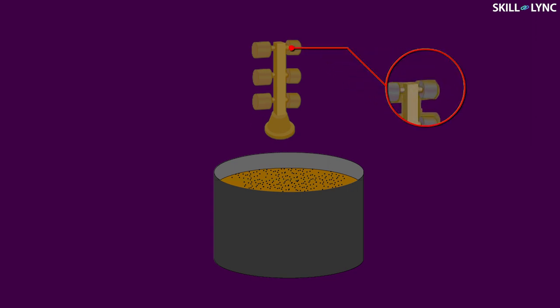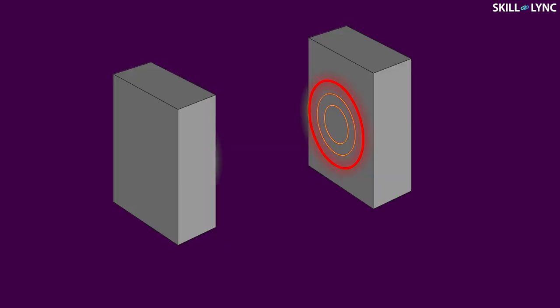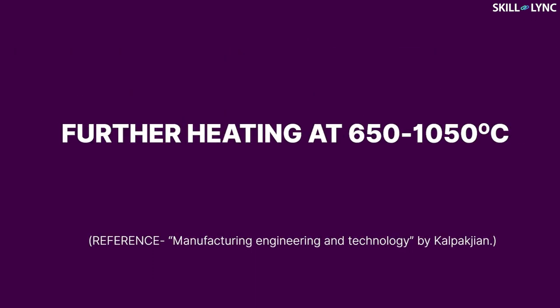Larger particles help in increasing the thickness quickly. The coating is then allowed to dry up for some time. Once the coating has dried up, it can be used as the mold. The single-piece mold is then inverted and heated at a temperature of 90 to 175 degrees Celsius to melt the wax pattern inside. The mold is kept in an inverted position to facilitate the molten wax to flow out, and this wax is collected in a container for reuse. The mold is further heated at 650 to 1050 degrees Celsius for around 4 hours to strengthen it and remove any leftover wax.